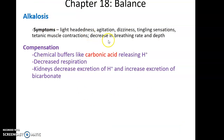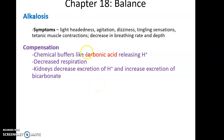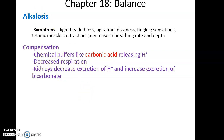Symptoms of alkalosis include lightheadedness, agitation, dizziness, tingling sensation, tonic muscle contractions, massive cramps, and decreased breathing rate and depth. The body compensates using chemical buffers like carbonic acid that release hydrogen ions, decreased respirations to retain more carbon dioxide and increase carbonic acid, and the kidneys decreasing excretion of hydrogen ions while increasing release of bicarbonate — losing excess base and retaining as much acid as possible. If these systems are disrupted, alkalosis will eventually require medical care, as extreme cases lead to coma and death.